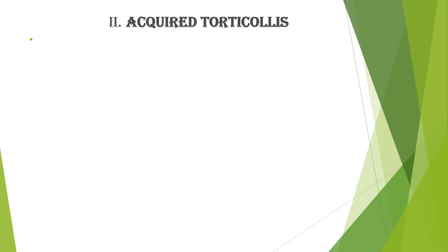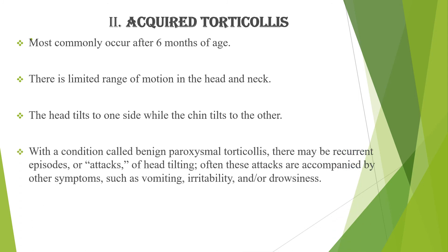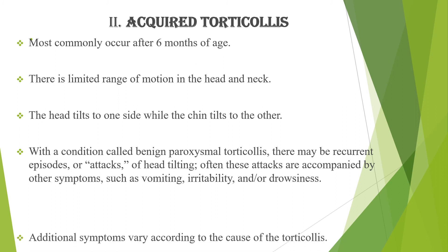The other type is acquired torticollis, which is most common after the age of six months. There is a limited range of motion in the head and neck, and the head tilts to one side while the chin rotates to the other. With a condition called benign paroxysmal torticollis, there might be recurrent episodes or attacks of head tilting, often accompanied by symptoms such as vomiting, irritability, or drowsiness.